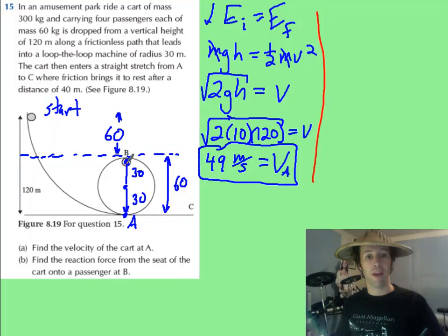Now for the next part, we want to find the reaction force up here at the top of the loop, at B. You have to know how fast it's going. So once again, use conservation energy. You can go from the start to this level here if you'd like to find that new energy, if you will.